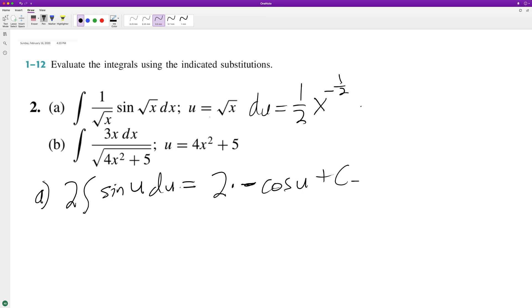plus C. So substituting back in, we have negative 2 cosine of the square root of x plus C. That's it for part (a). What about part (b)? So du is going to be equal to 8x.